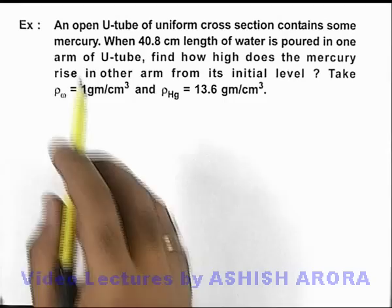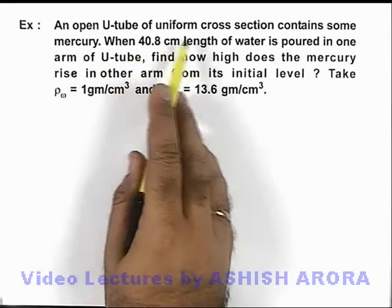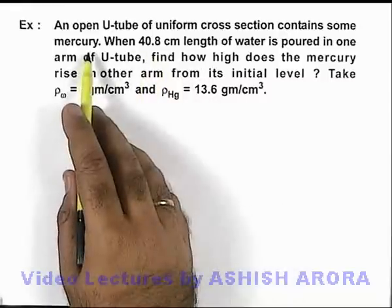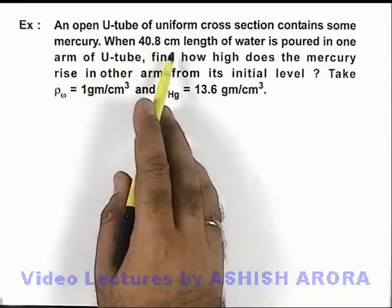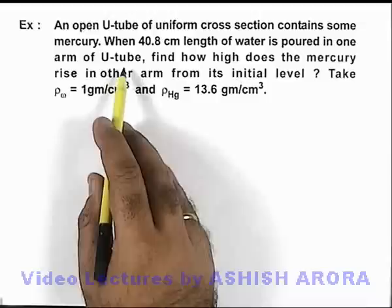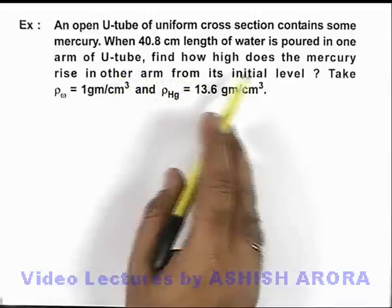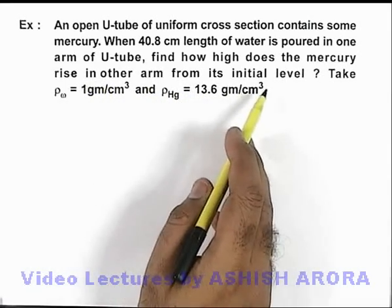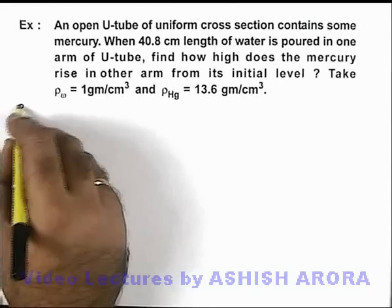In this example, we are given that an open U-tube of uniform cross-section contains some mercury. When 40.8 centimeter length of water is poured in one arm of the U-tube, we are required to find how high the mercury rises in the other arm from its initial level. The densities are also given to us.